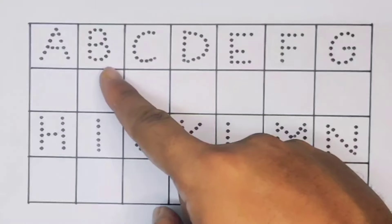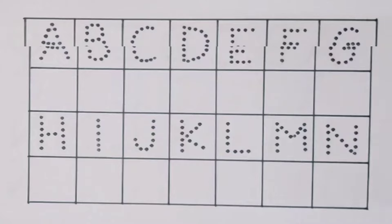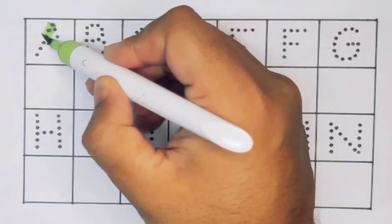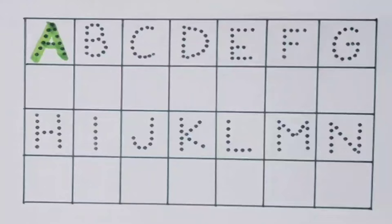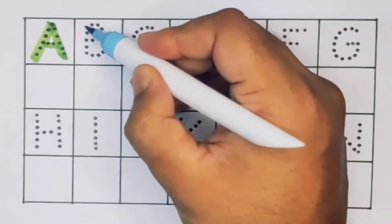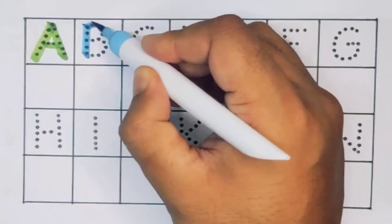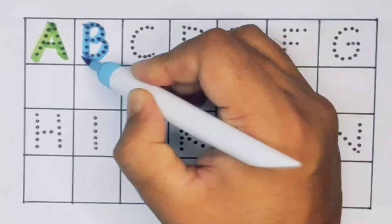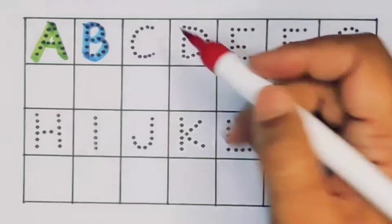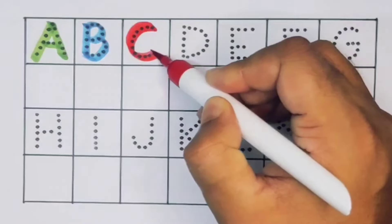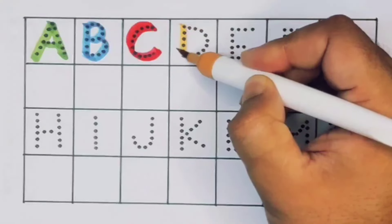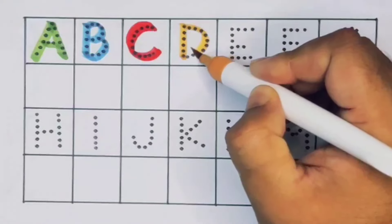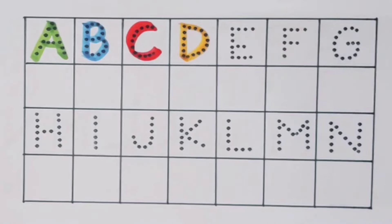A, A for aeroplane. Next, B, B for bus. Next C, C for cow. Next D, D for drum. Next E, E for egg.